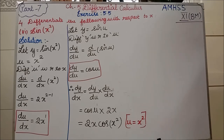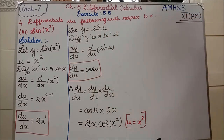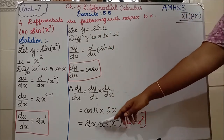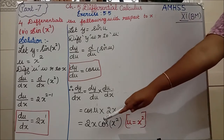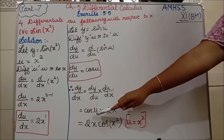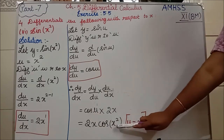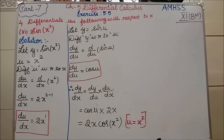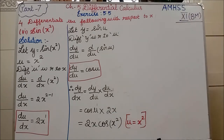Substituting u = x² into the answer: dy/dx = 2x·cos(x²). The 2x is written in front, and cos(x²) replaces cos(u). That is the answer for the sixth subdivision. Next we will see the seventh subdivision.